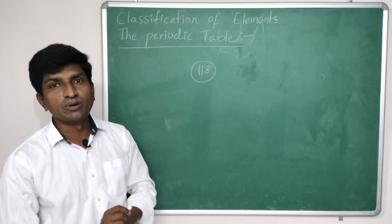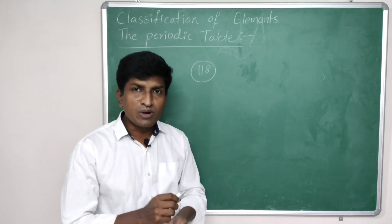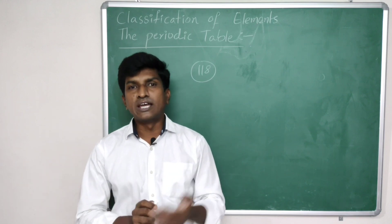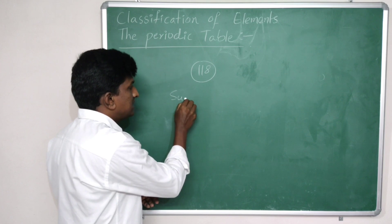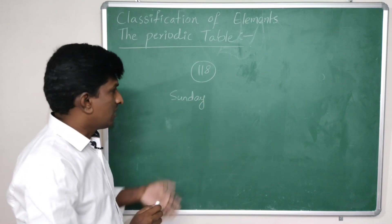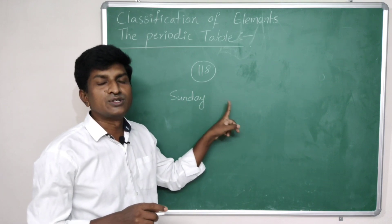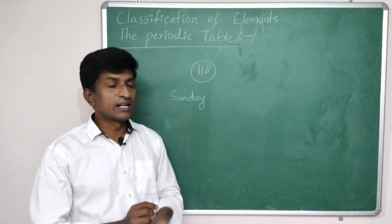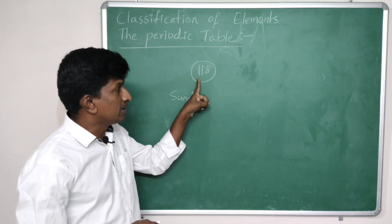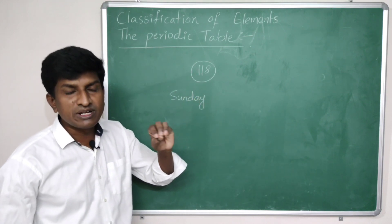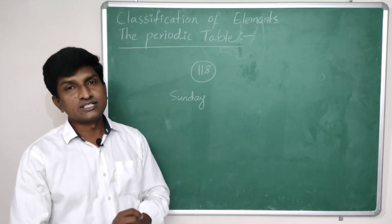Scientists classified elements in different ways, and that is said to be the periodic table. What is periodicity? Periodicity means properties of elements repeating at regular intervals. For example, if today is Sunday, after seven days the 8th day will again be Sunday — that repeating pattern is called periodicity.